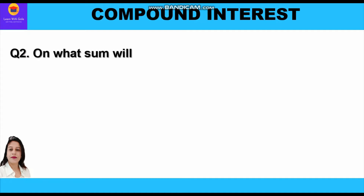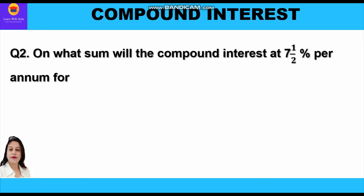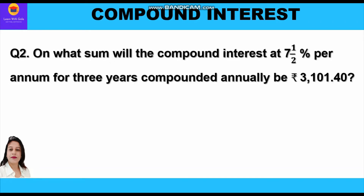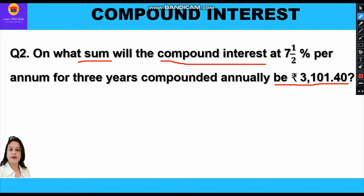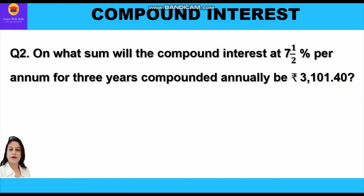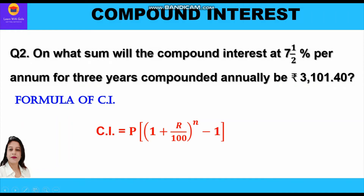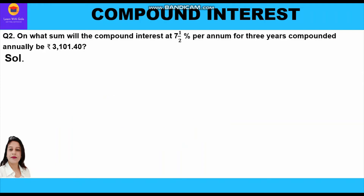Now let's move to the second question. On what sum will the compound interest at seven and a half percent per annum for three years compounded annually be rupees 3101.40? Here compound interest is given. We have to find the sum, that is the principal. Rate of interest is seven and a half percent per annum and time is three years. Since compound interest is given we can use the CI formula directly: CI equals P into bracket one plus R upon hundred, whole raised to power N, minus one.